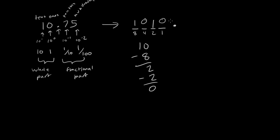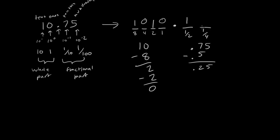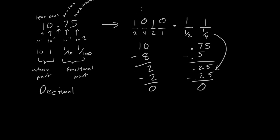So now I have my radix point, and we have 0.75 to convert. Writing out our places — the half spot and the one-fourth spot — I ask: what's the highest power of 2 that fits into 0.75? That's 1/2, which is 0.5, leaving 0.25. So I write a 1 there. Then 1/4 is exactly 0.25, so subtracting that leaves nothing. We write a 1 there too. So 10.75 in decimal is 1010.11 in binary.